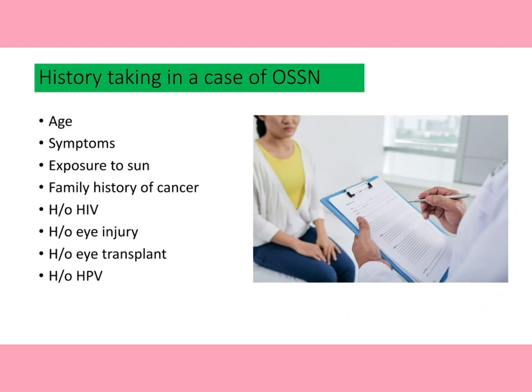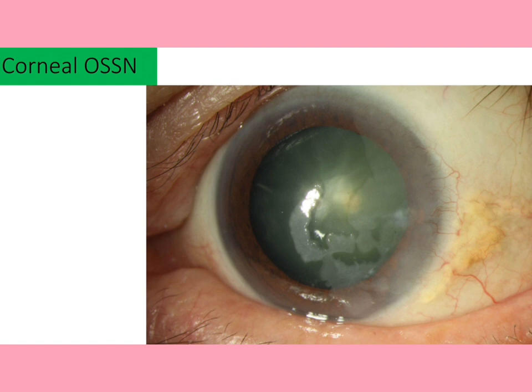If a person has no HIV infection, no eye injury, no eye transplant, and no HPV infection, and is only exposed to the sun, most such patients are more prone to pterygium. However, if the person has a systemic disease or smokes along with excess sun exposure, they can develop OSSN. Quitting smoking as soon as possible is therefore important.